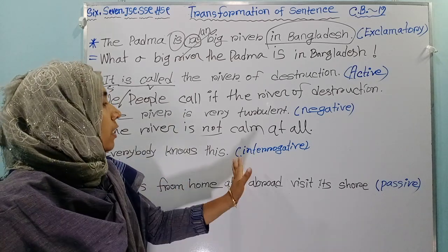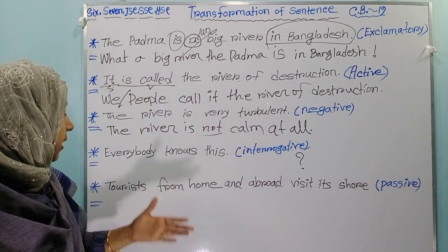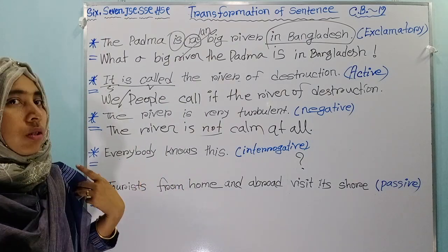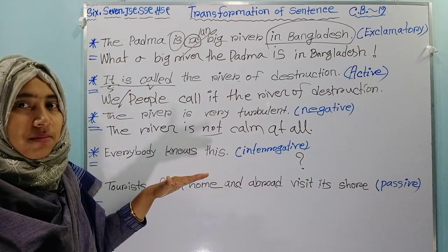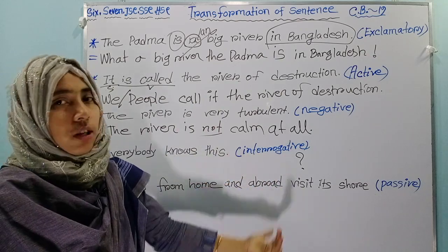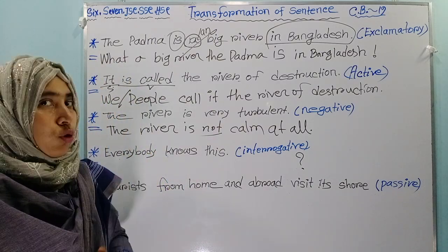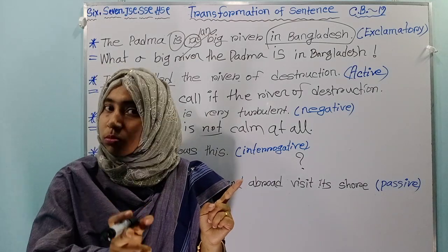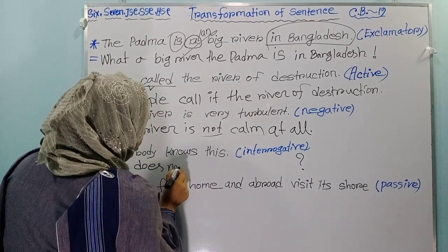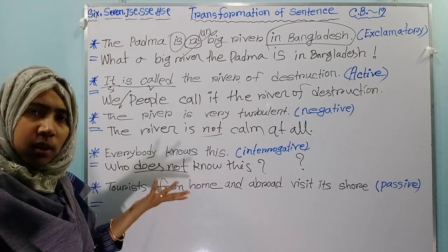For the next one, you have to make it interrogative. When you make it interrogative, you put an interrogation mark at last and a WH-word or auxiliary/modal verb at first. Keep in mind: if the sentence is affirmative, you make it negative interrogative; if it is negative, you make it affirmative interrogative — a cross contradiction. Here: 'Everybody knows this' — affirmative — so who does not know this? You write: 'Who does not know this?' and the answer is 'everybody knows this.'